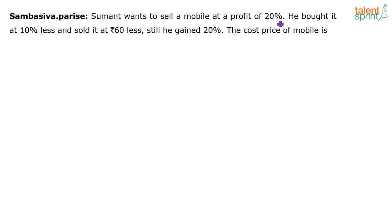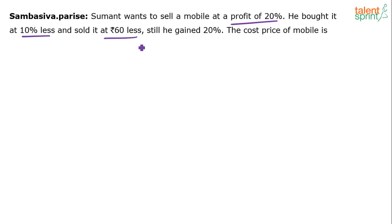Sumanth wants to sell a mobile at a profit of 20%. He bought it at 10% less and sold it at Rs 60 less, but still gained 20%. What is the cost price of the mobile? He paid 10% less for the mobile phone and while selling he reduced the price by 60 rupees, yet ended up making the same profit of 20%.